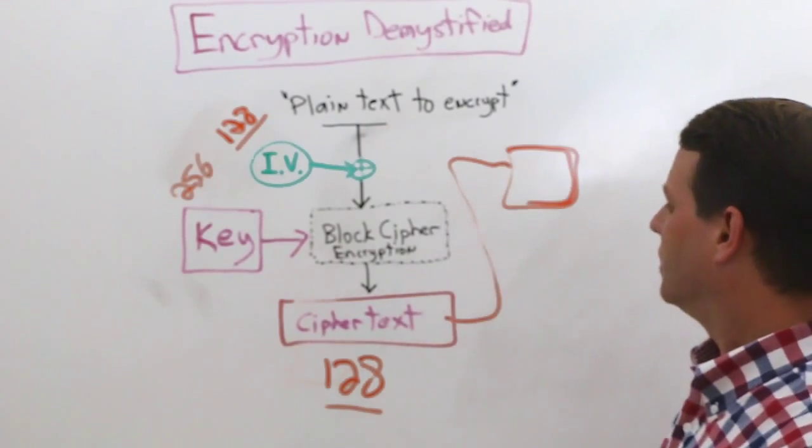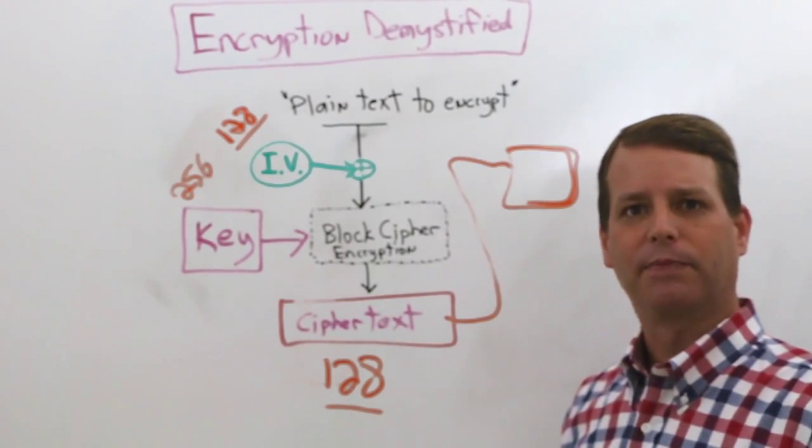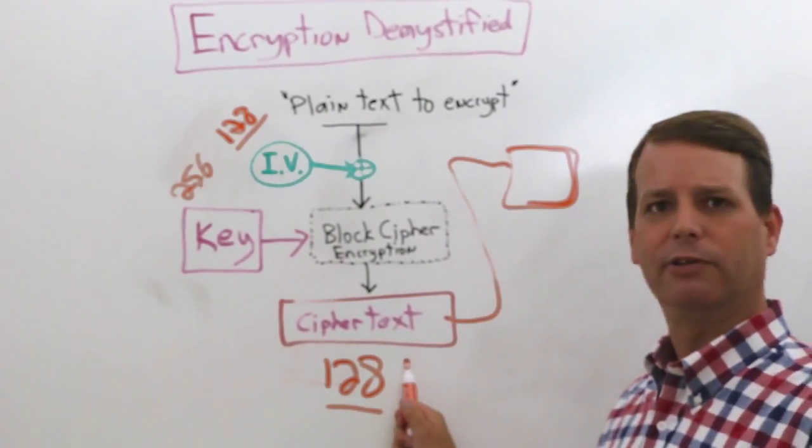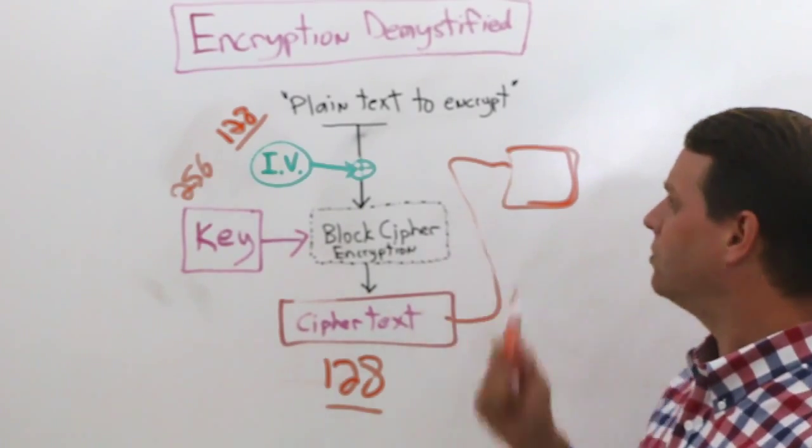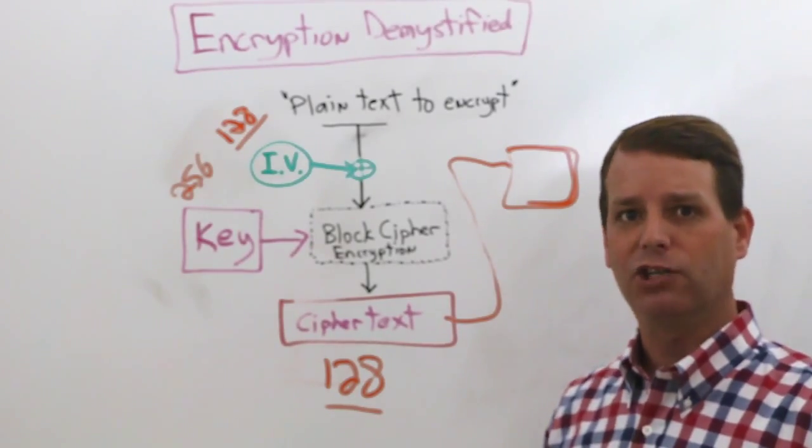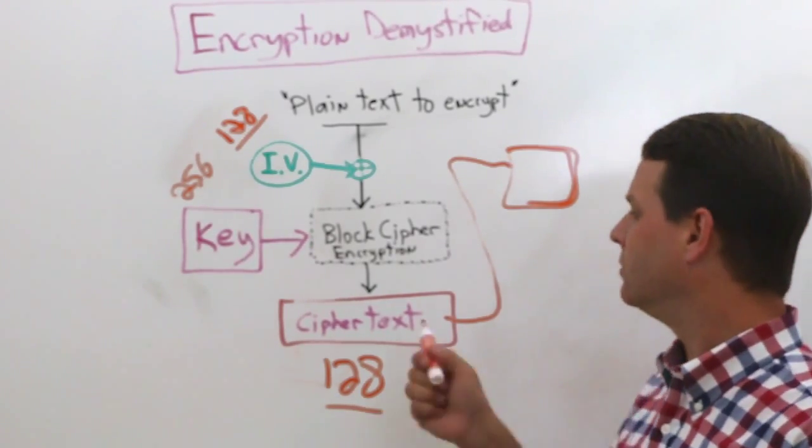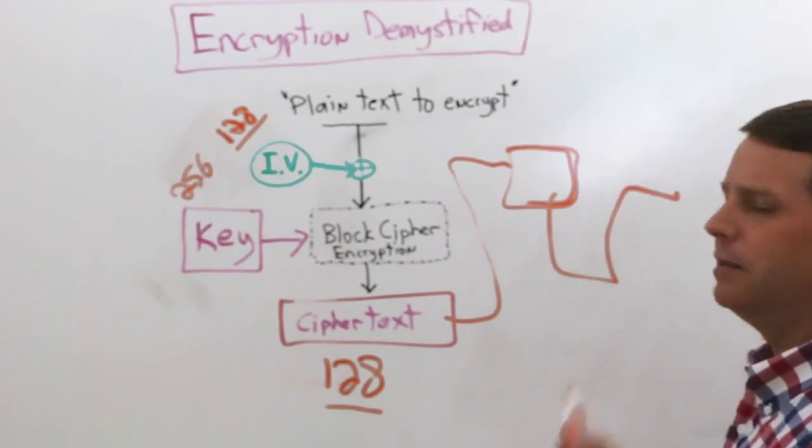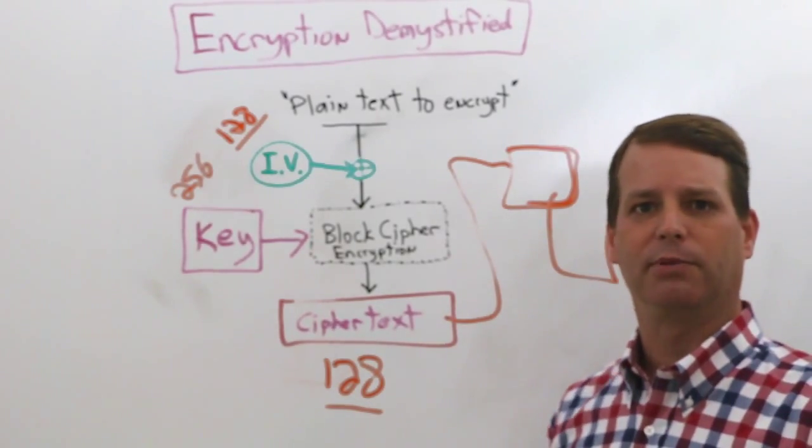So we take another, we're going to create another block cipher. Now I'm going to use the block cipher that I just made as the initialization vector for the second block cipher. As I have multiple block ciphers that are required, each 128 bits long, I'm going to use the preceding block cipher to seed the next block cipher.